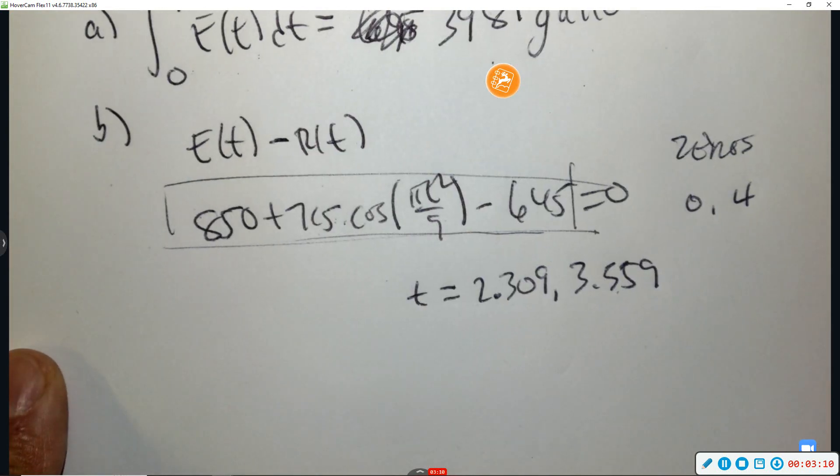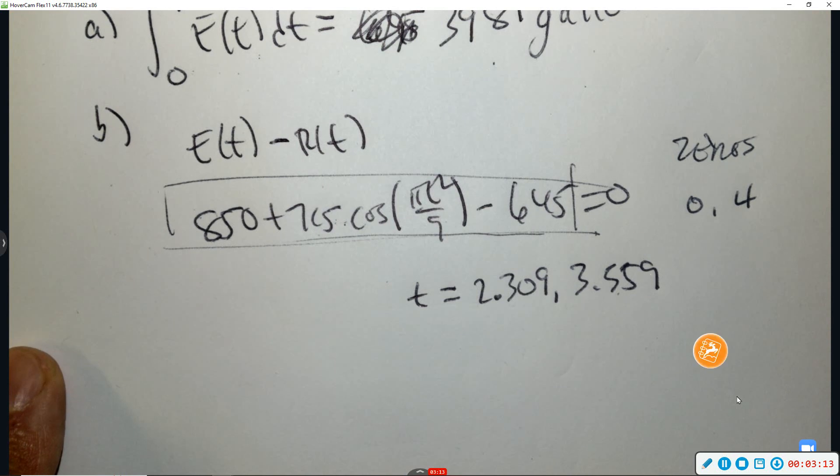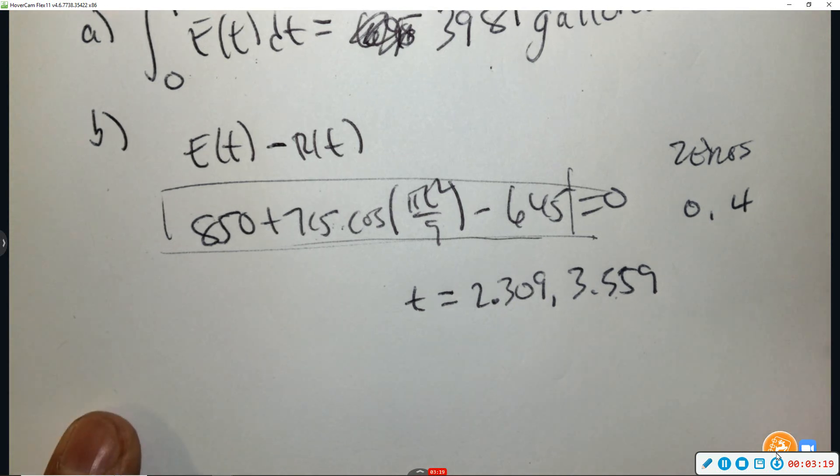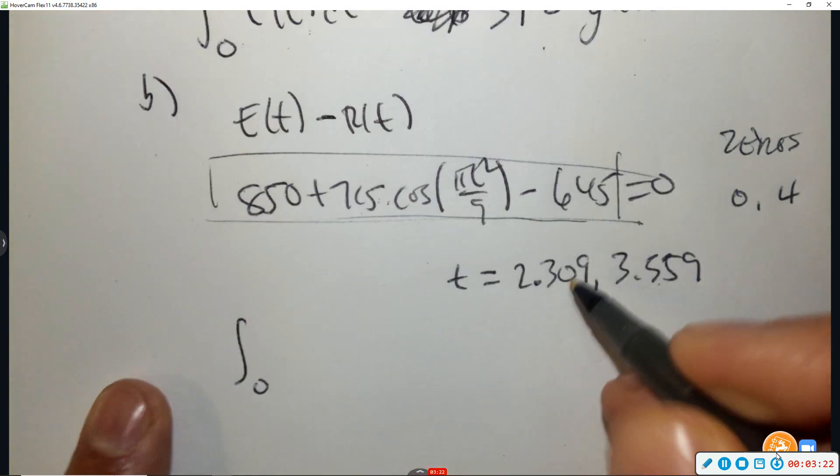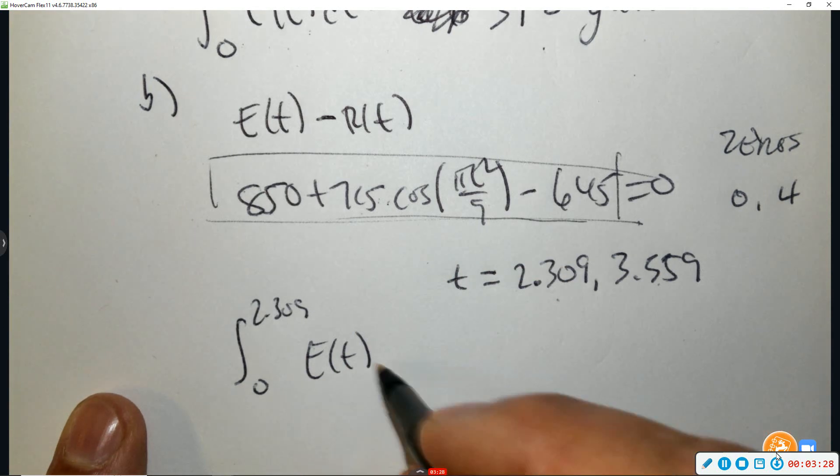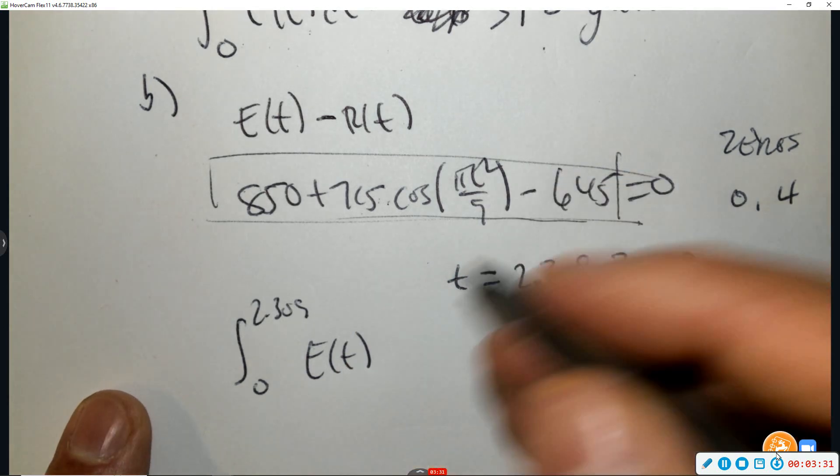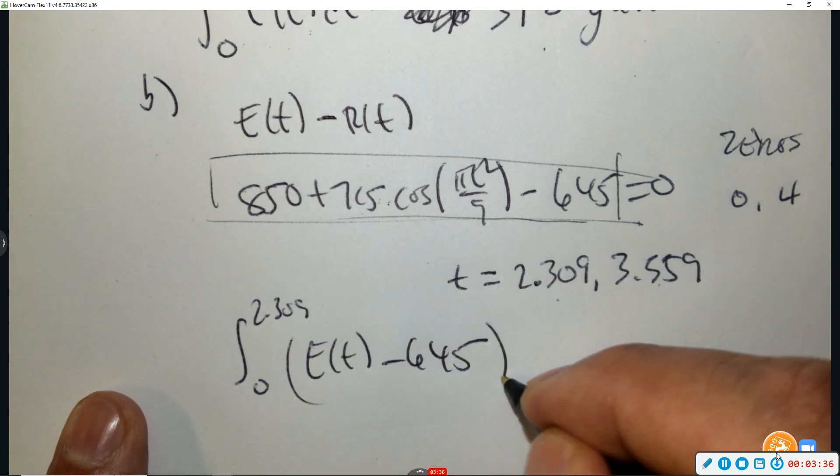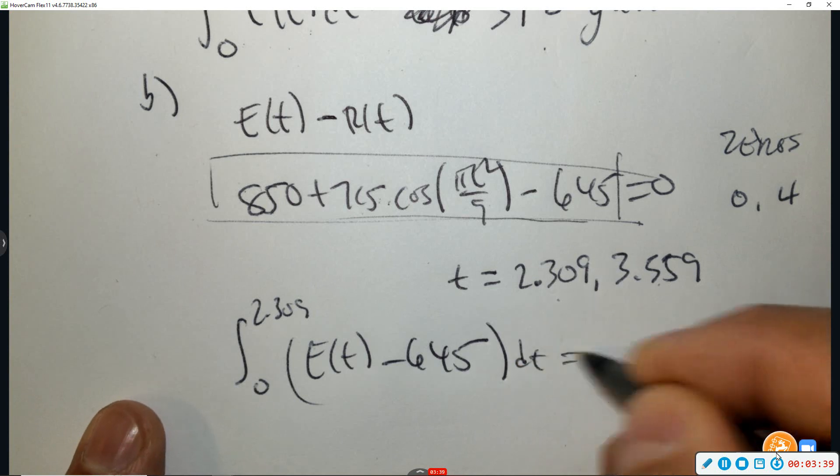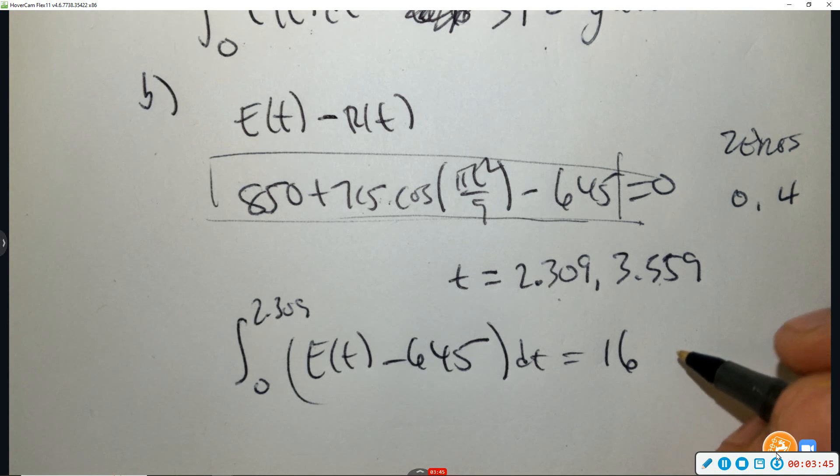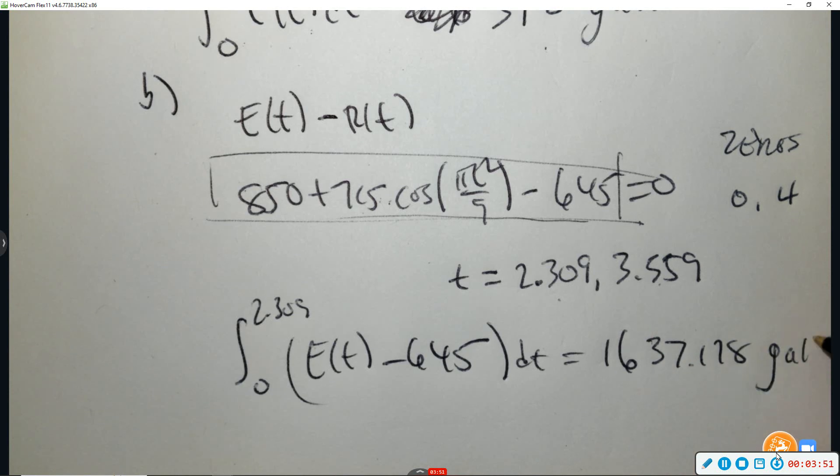So I would graph this and see what the zeros are. And make sure your window goes from like zero to four. Those are your critical numbers. So then we're going to integrate from zero to 2.309. And we're going to integrate the equation going in minus what's going out. So press pause. Remember, type that in for E at T. And you get 1,637.178 gallons.